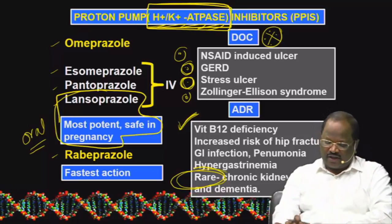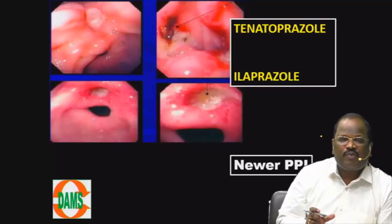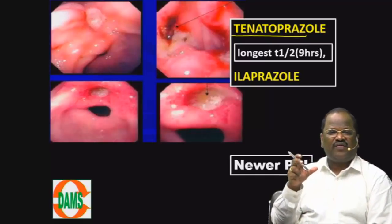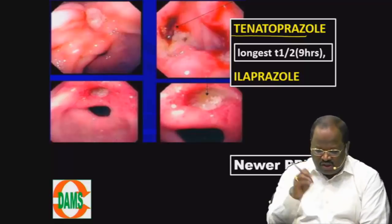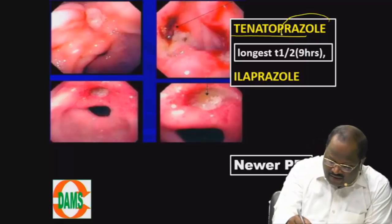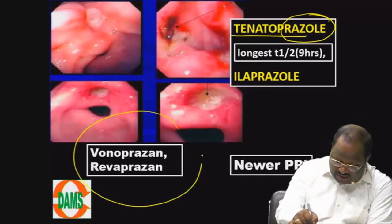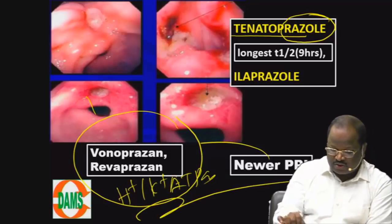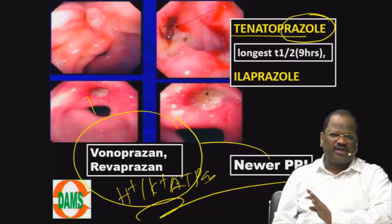One more important point: among newer proton pump blockers, we have tenatoprazole and ilaprazole. Tenatoprazole has a half-life of about nine hours — the longest half-life among PPIs. Usually proton pump blockers have a half-life of only two to three hours, so tenatoprazole stands out with its long half-life.